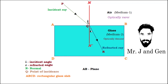Seventh term: plane of incidence. The plane containing the incident ray and the normal is called the plane of incidence. Since this is a 2D figure I can't show it very clearly — we will see a 3D figure in the next video. Eighth term: plane of refraction. The plane containing the refracted ray and the normal is called the plane of refraction. So we have learned all eight important terms and the two different media.